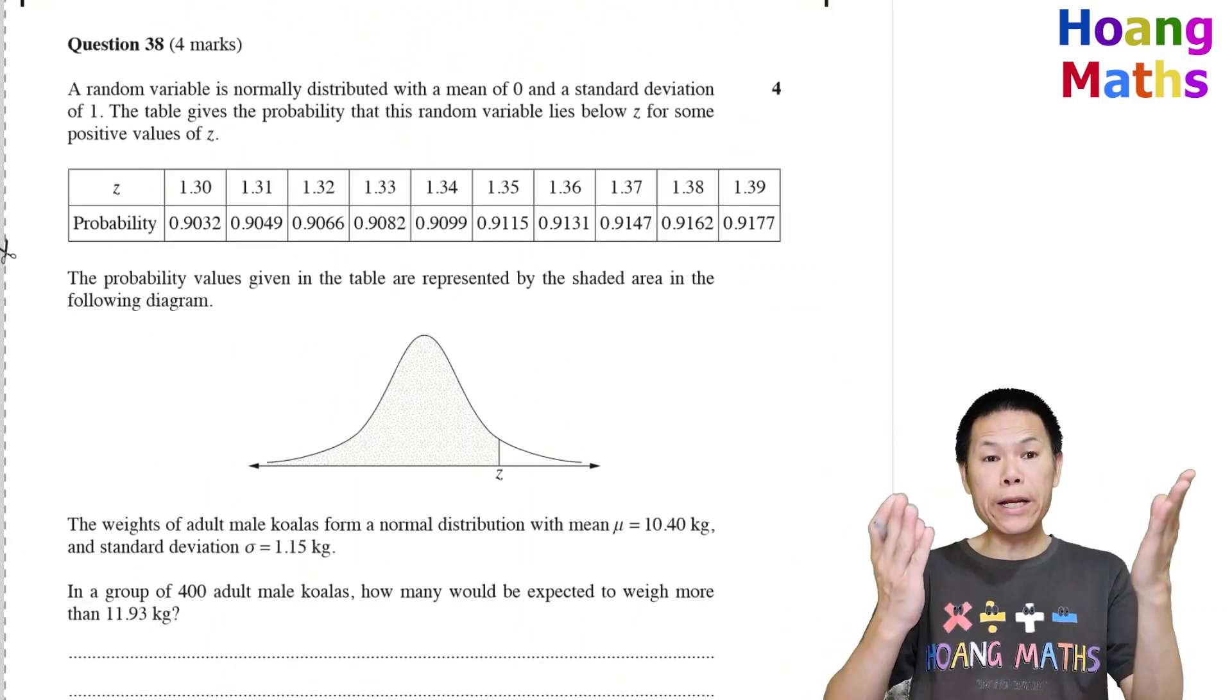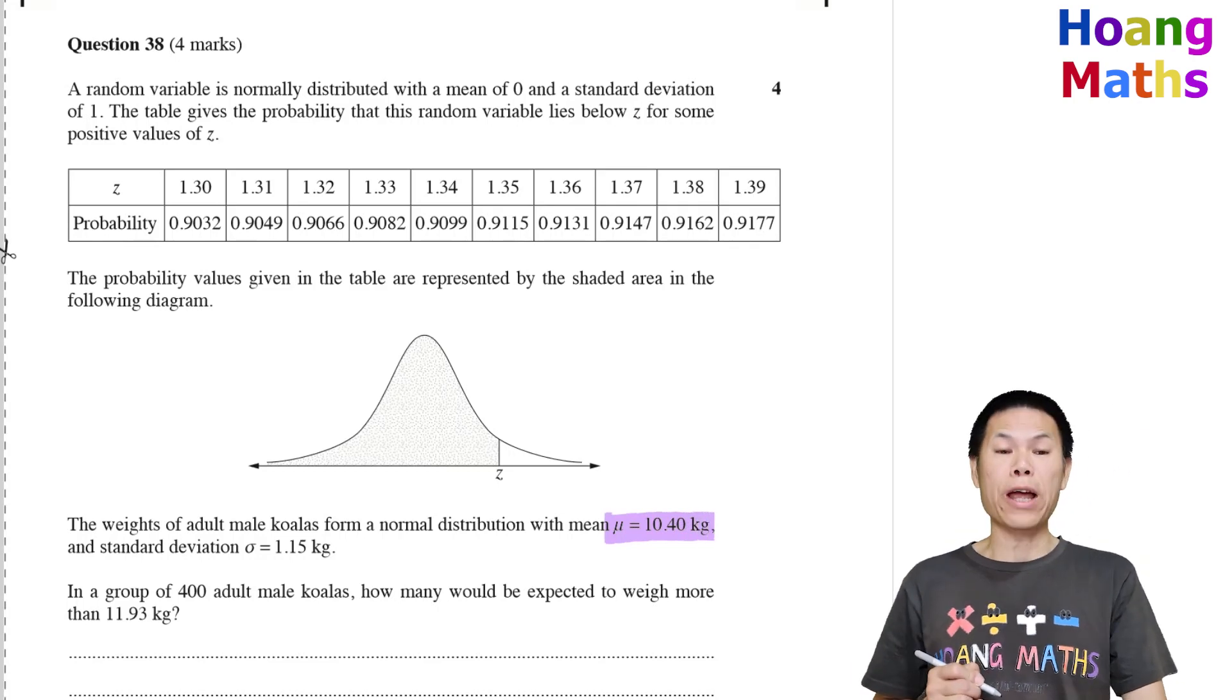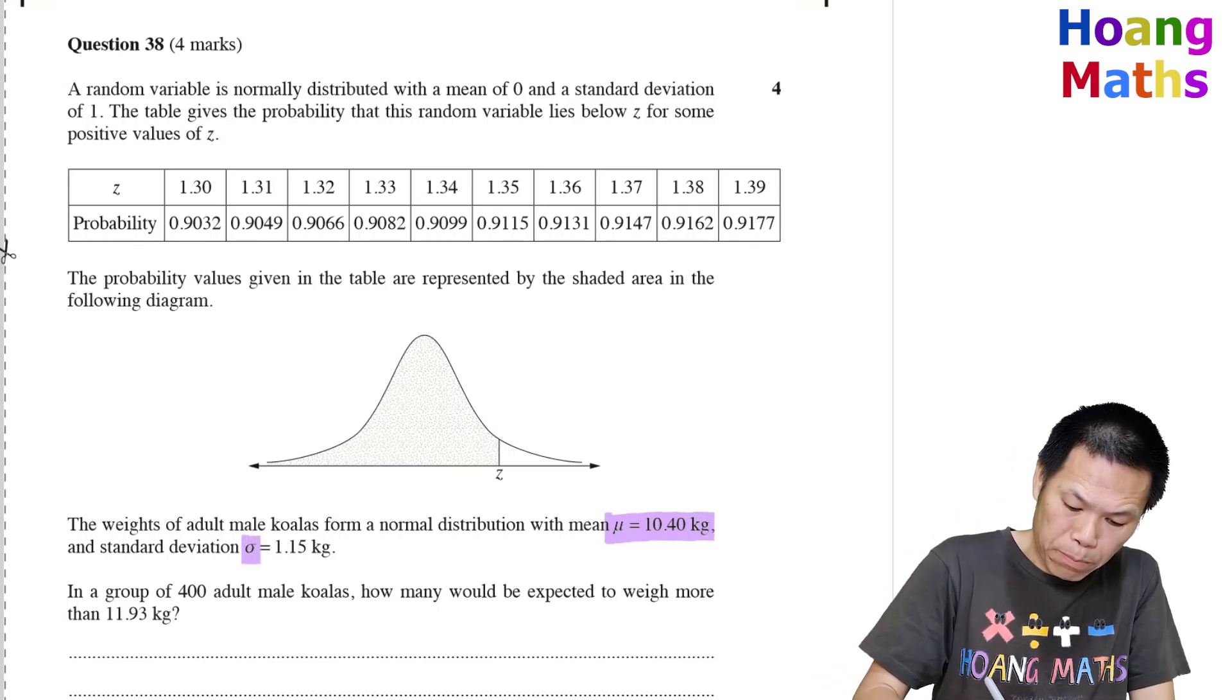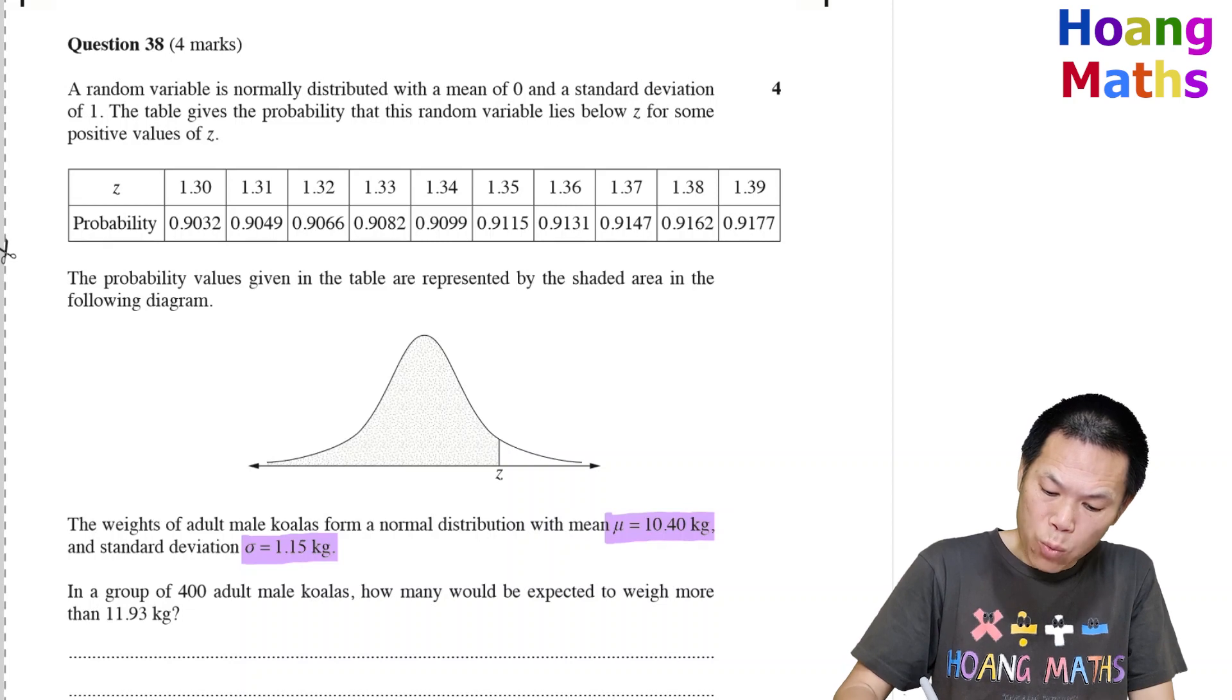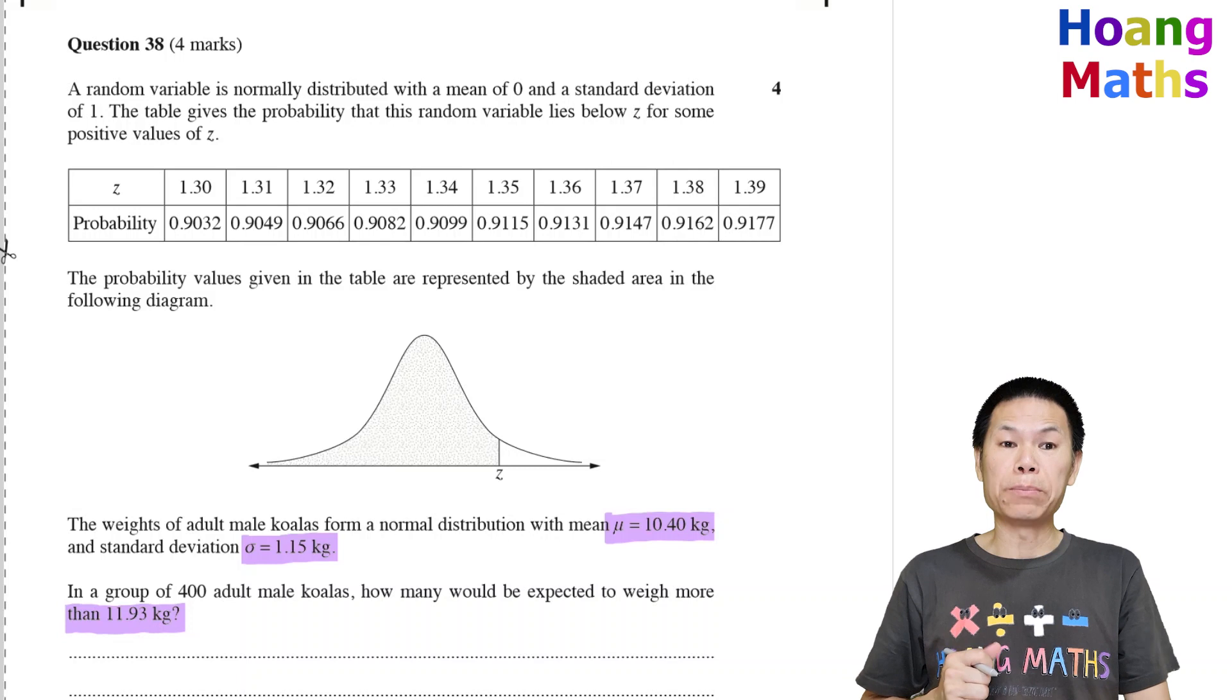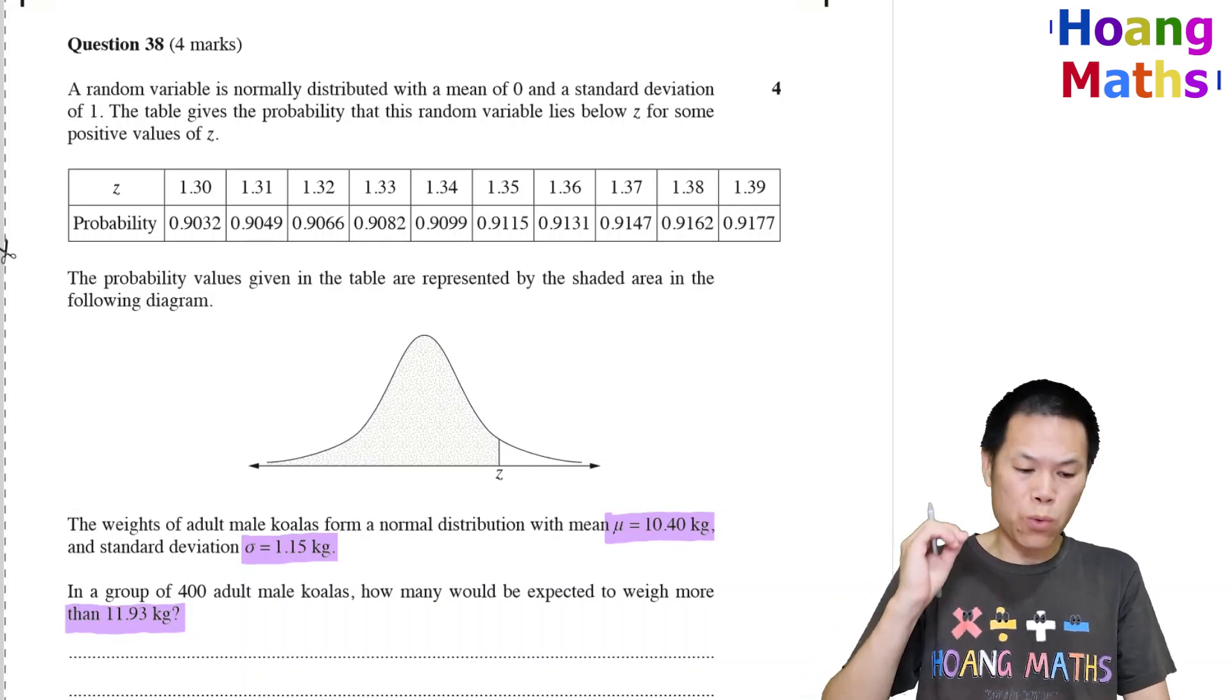Question 38. First of all, we know the mean is 10.40 kilograms and the standard deviation is 1.15 kilograms. We need to work out the expected weight for more than 11.93 kilograms. First let me explain how the table works.